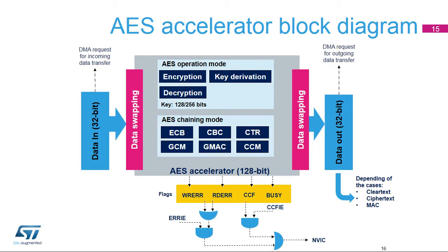This simplified block diagram of the AES Accelerator shows the data path from data in on the left to data out on the right. The AES Accelerator processes 128-bit data blocks using an encryption key with a length of either 128 or 256 bits, with or without a data swapping option.